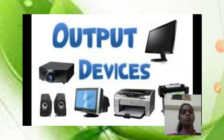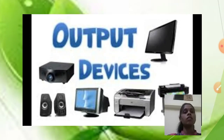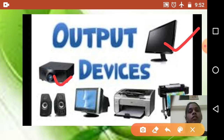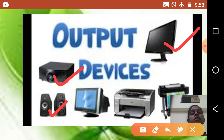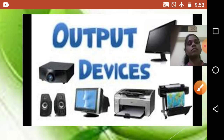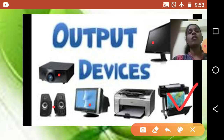The device which takes output from the computer is known as an output device. Now let's see the output devices. The first one is your monitor, then projector, and speaker. Also included are the LCD monitor, a simple monitor, printer, and plotter. All these are output devices: monitor, projector, speaker, printer, and plotter.